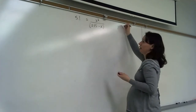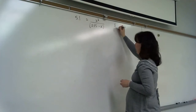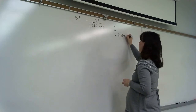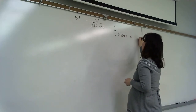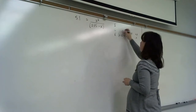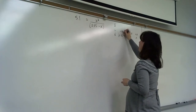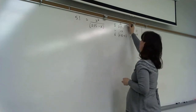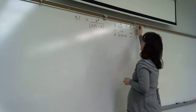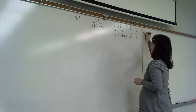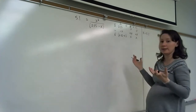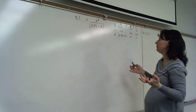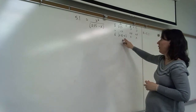The ICE table for this would be A in equilibrium with B plus C. Initial concentration of A is 0.15, B and C start at 0. A decreases by x, B and C each increase by x. K equals 5.1. Since K equals 5, by definition we can't use the 5% approximation and must solve the quadratic equation.